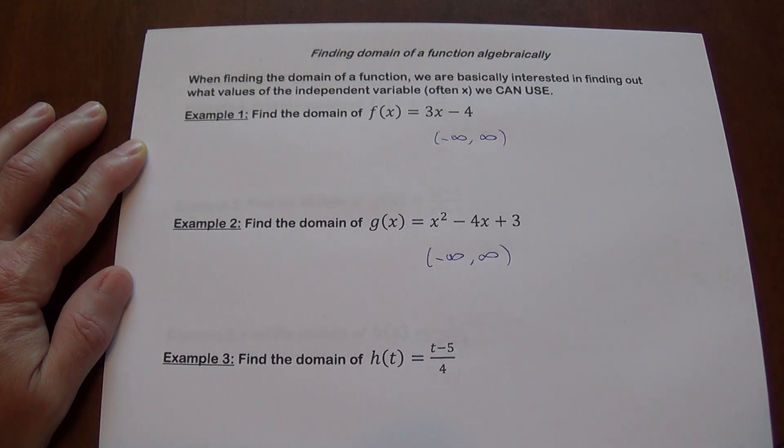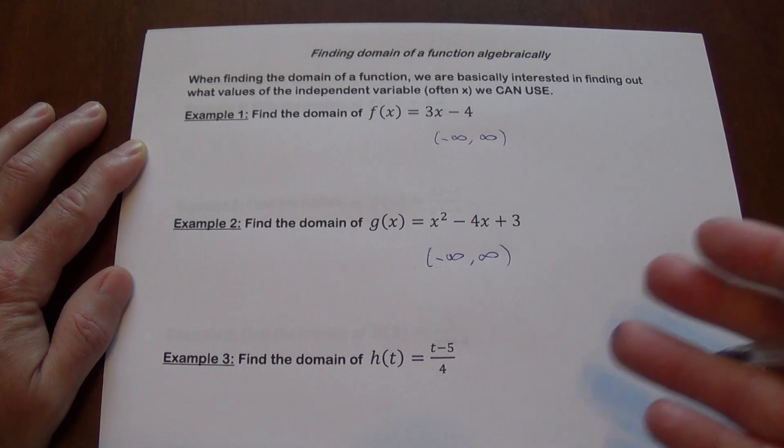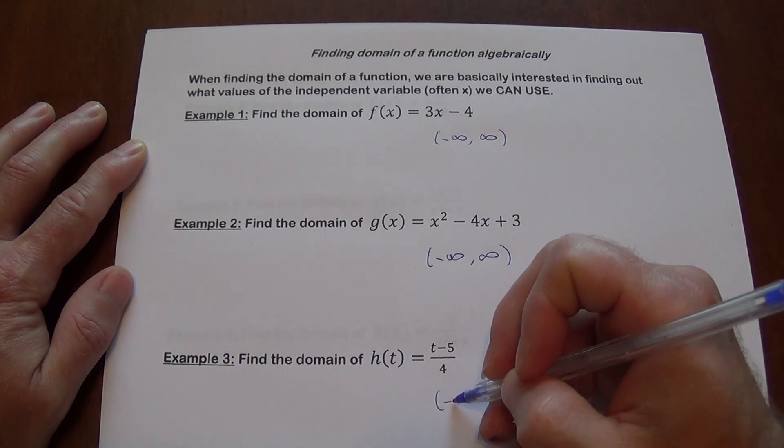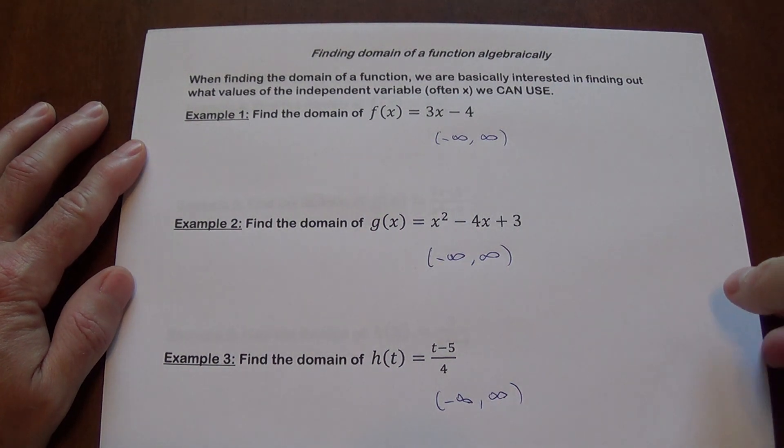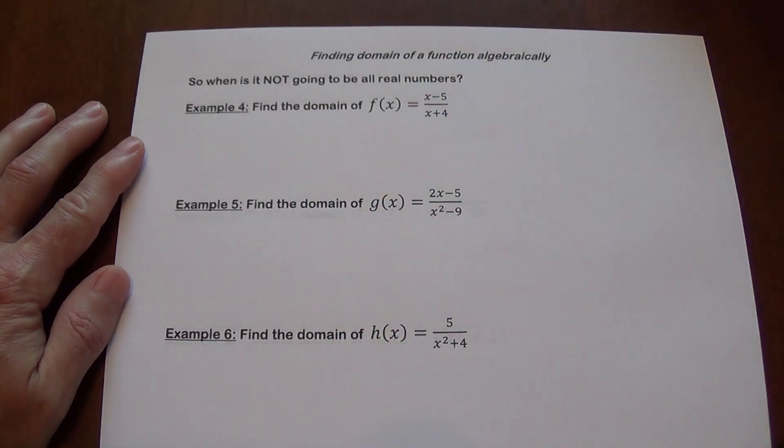The same thing happens here. Please note I use a different variable here, it does not change anything. We still look at our independent variable, which in this case is t. So it's going to be negative infinity to infinity as well. So this is pretty basic.